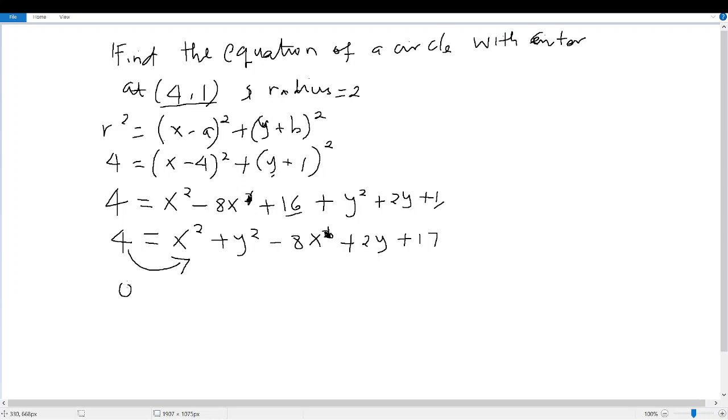So zero equal to now x² plus y² then minus 8x. We have corrected up here that there is no squared, it was an error. So here is 8x.